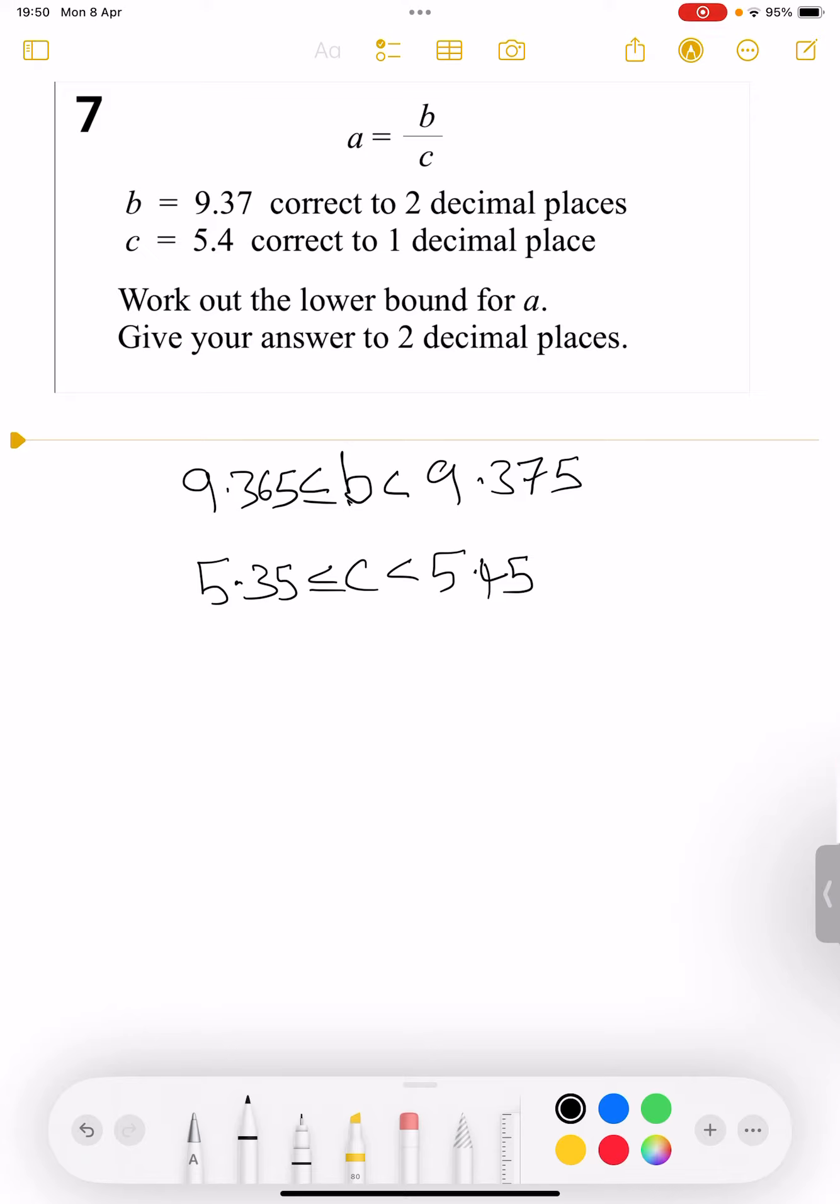Okay, it then wants me to work out the lower bound for a. So remember that if I've got a division, to get the lower bound for a I need the lower bound of b divided by the upper bound of c. So when you've got a divide, to get the lower you do the smallest divided by the biggest; to get the upper you do the biggest divided by the smallest. So in this case...